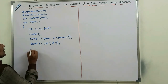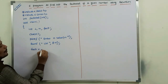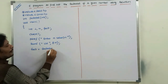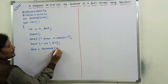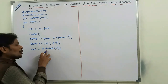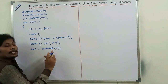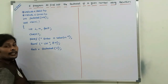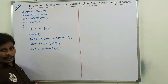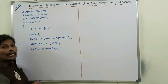Now, I am writing: fact = factorial(n). Here, factorial is nothing but the function name. n is nothing but the parameter that we are passing to the function called factorial. This is called the calling function.